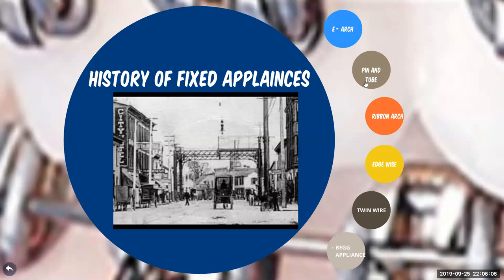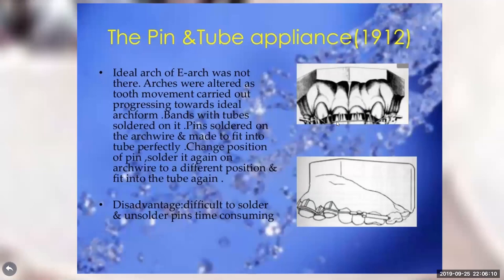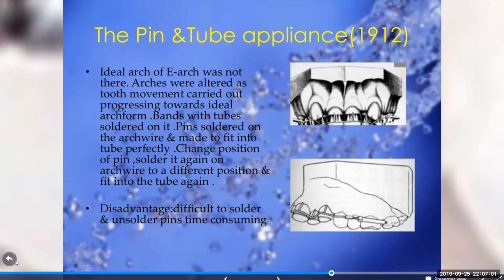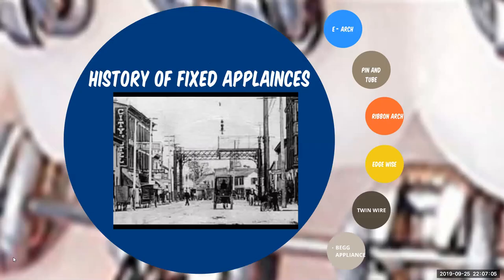After the E-arch, Angle developed the pin and tube appliance to get better control of tooth and root position. All teeth were banded, and tooth movement was accomplished by repositioning individual pins at each appointment. However, this required a lot of craftsmanship — only Angle and a few of his students could handle it. This appliance was rejected.